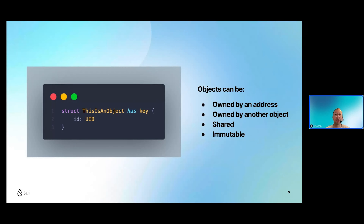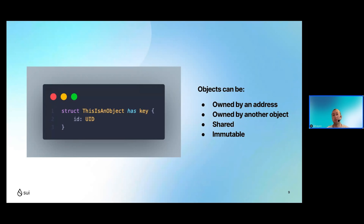Every object has two things that make it an object: the 'has key' modifier and an id field. The 'key' refers to the fact that it's a key in global storage, meaning you can write this object to global storage. The 'id' — UID — refers to the unique global identifier generated at runtime. Objects can have four different types of ownership: owned by an address (like a JPEG NFT that lives under your address), or owned by another object — for example, a player hero in an RPG can equip or sell a sword.